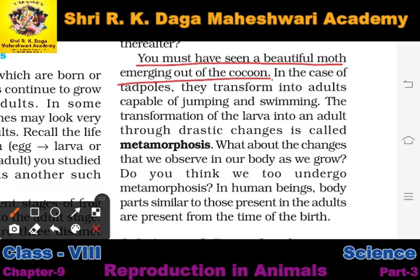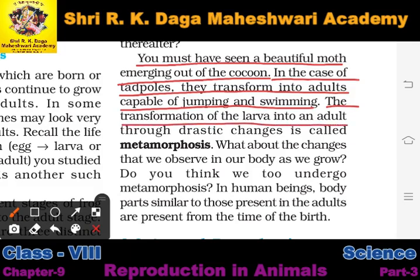You may have seen last year how a beautiful moth comes out of a cocoon. In the case of tadpoles, they transform into the adult capable of jumping and swimming. The transformation of the larva into an adult through drastic changes is called metamorphosis. When the young one completely develops into a new adult with completely different characteristics, that process is called metamorphosis.